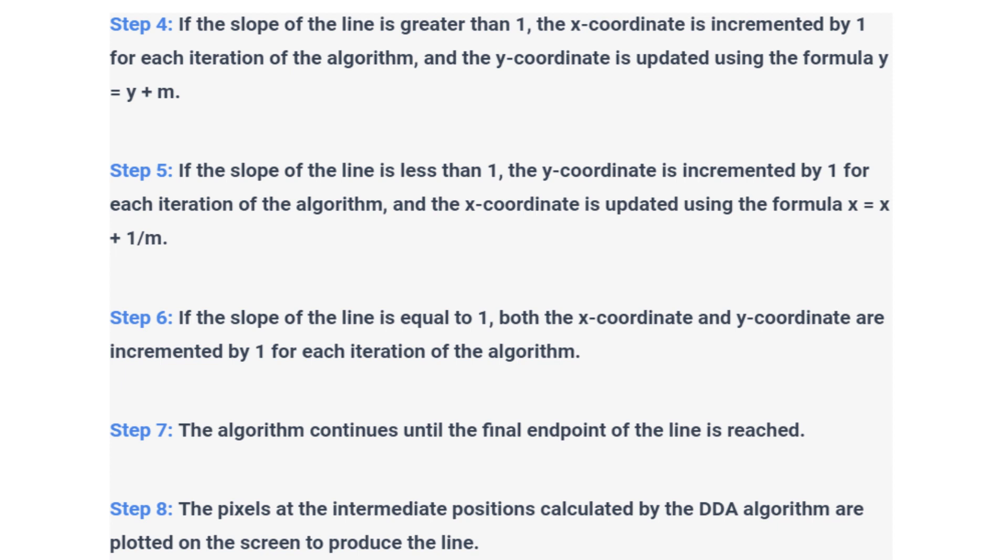Step 5. If the slope of the line is less than 1, the y coordinate is incremented by 1 for each iteration of the algorithm and the x coordinate is updated using the formula x equals x plus 1/m.